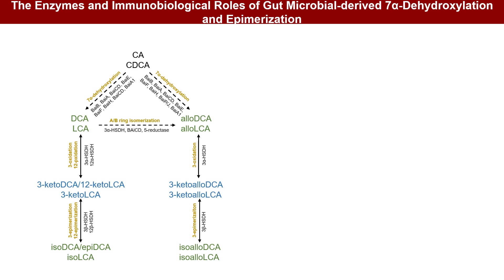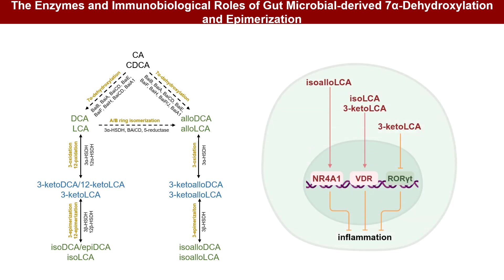The 7-alpha-dehydroxylation of BAs, a critical microbial transformation, was comprehensively understood in 2020. This process involves 8 reaction steps catalyzed by 7 enzymes. Additionally, hydroxysteroid dehydrogenase catalyzes BA oxidation and epimerization. These discoveries highlight the immunobiological roles of LCA and DCA isomers, such as 3-keto-LCA, iso-LCA, and isoallo-LCA, which can regulate RORγ, NR4A1, and VDR, thus alleviating intestinal inflammation.